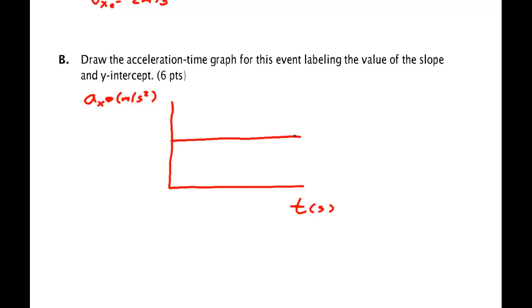And this should be a horizontal line like that. So it has a slope of 0 and its value, 5 meters per second squared.